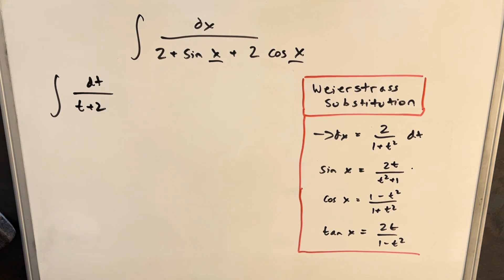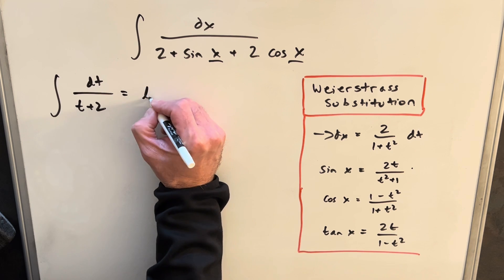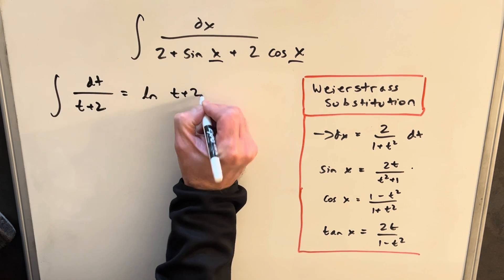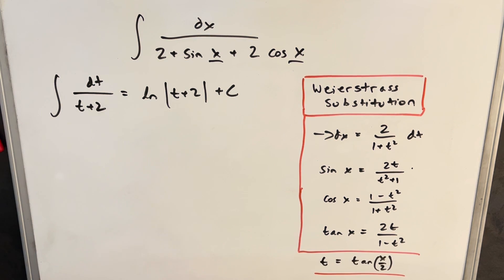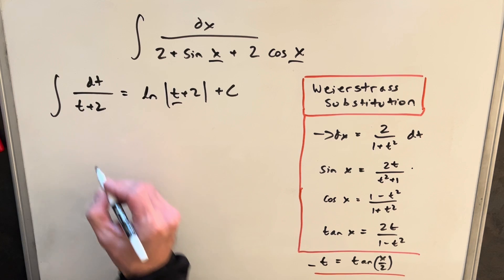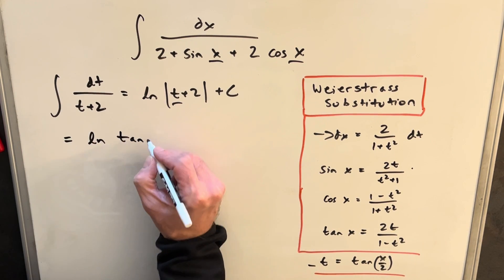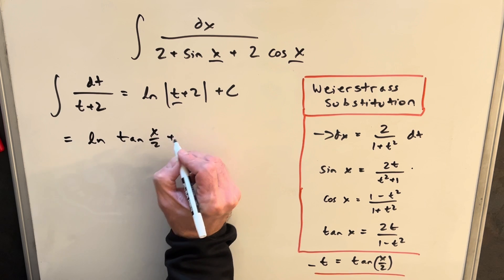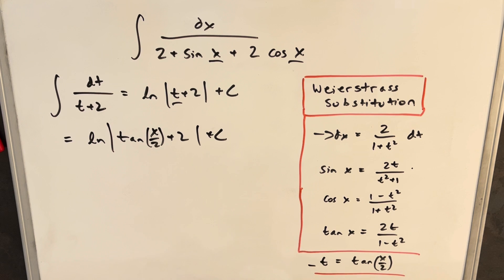OK, so now we can actually integrate. And obviously this is pretty simple. The integral of 1 over t plus 2 is just natural log absolute value t plus 2 plus c. Now we can just back substitute. We know what our t is. It's tan x over 2. So we're going to have ln absolute value tan x over 2 plus 2 plus c. So this is a perfectly good answer right here.